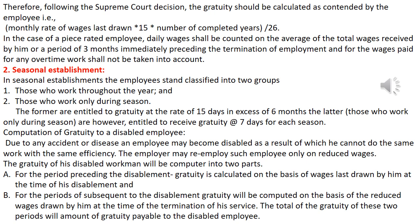In the case of a piece-rated employee, the daily wages shall be calculated on the average of total wages received by him over a period of 3 months immediately preceding the termination of employment. Wages paid for any overtime work will not be taken into account. This is how Gratuity is calculated for piece-rated employees.